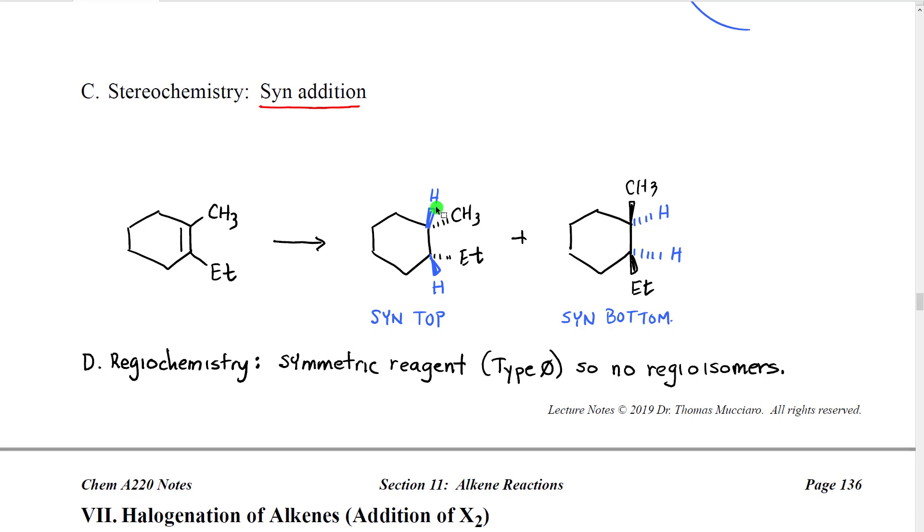So if we add syn from the top then what we observe is we get both hydrogens on a wedge because they are on the face closest to us and once they add these trigonal planar carbons in the alkene are going to become tetrahedral and the other group that was attached, in this case a methyl or an ethyl, is going to be pushed away from the hydrogen that adds. So since the hydrogen is on a wedge these groups will be pushed down to dashes, so this would be the syn top. But remember that an alkene has two faces so we could also add from the bottom face and in that case both of the hydrogens would go on dashes and the groups that are already attached would be pushed forward onto wedges.